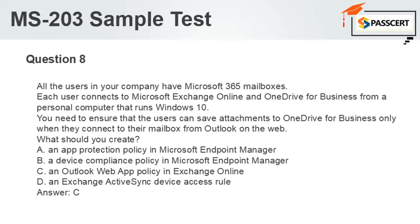Question 8. All the users in your company have Microsoft 365 mailboxes. Each user connects to Microsoft Exchange Online and OneDrive for Business from a personal computer that runs Windows 10. You need to ensure that the users can save attachments to OneDrive for Business only when they connect to their mailbox from Outlook on the web. What should you create? A. An app protection policy in Microsoft Endpoint Manager. B. A device compliance policy in Microsoft Endpoint Manager. C. An Outlook web app policy in Exchange Online. D. An Exchange ActiveSync device access rule. Answer: C.